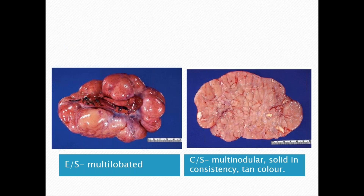This is the external surface of the dysgerminoma — the ovary is enlarged and multi-lobated. We can also see the fallopian tube portion on the external surface. On the cut surface, we can see multinodularity and solid consistency. The multinodularity is due to the presence of septa between the nodules, and the tumor is tan in color.